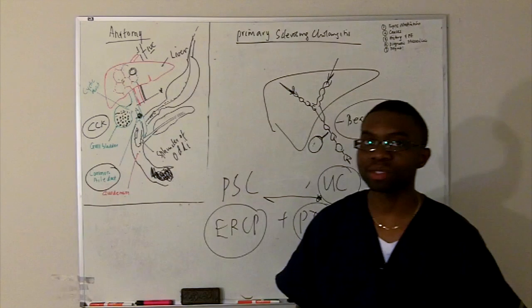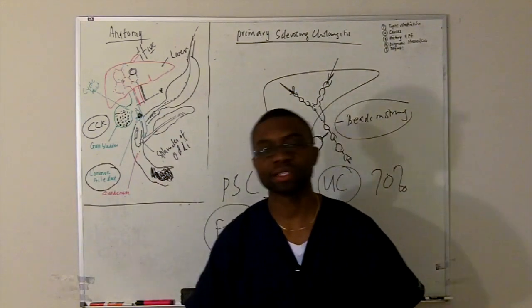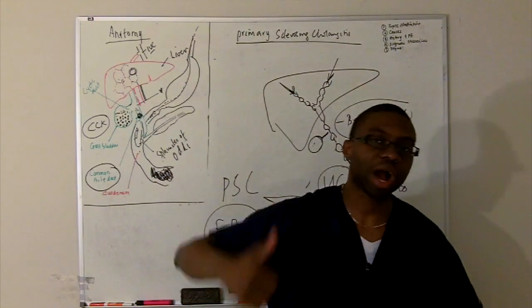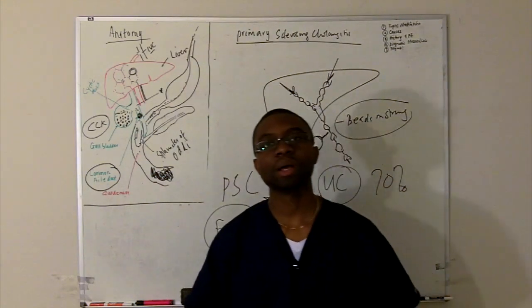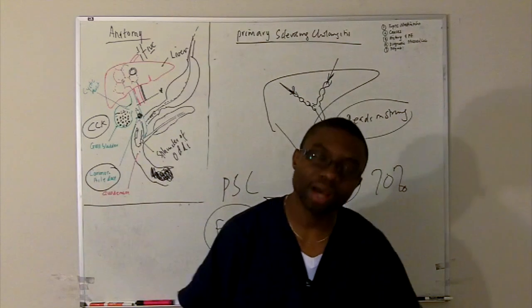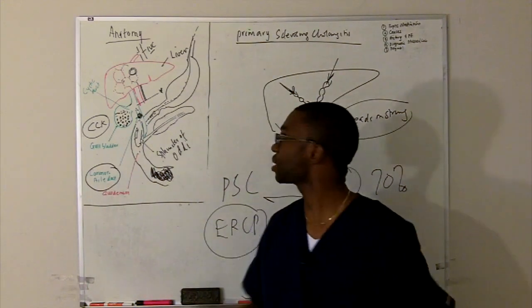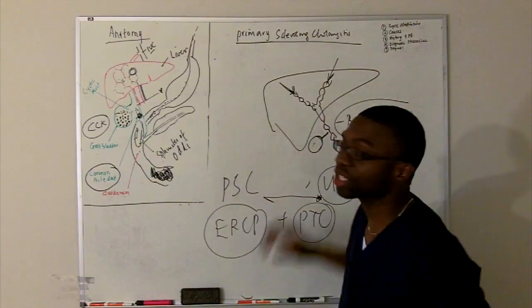If we order labs, what do you think we're going to see? You're going to see the cholestatic LFTs. You're going to see your alkaline phosphatase is going to go up. Your GGT is going to go up. Your ALT is going to go up because it's both intrahepatic and extrahepatic.